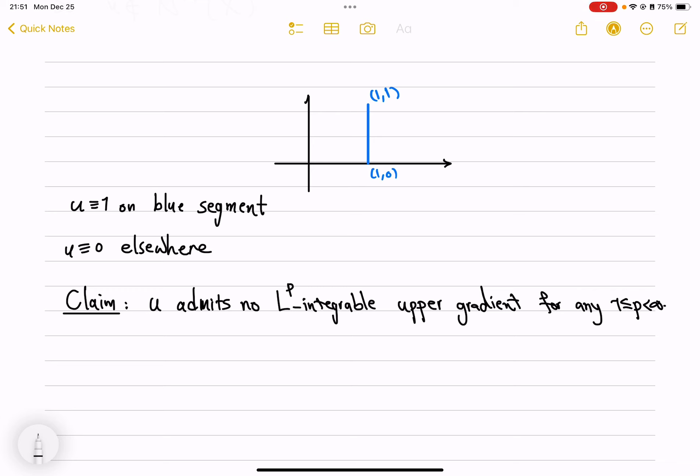and zero L square, although this function is zero almost everywhere, it is not in the Newtonian Sobolev space because it does not admit any integrable upper gradient.